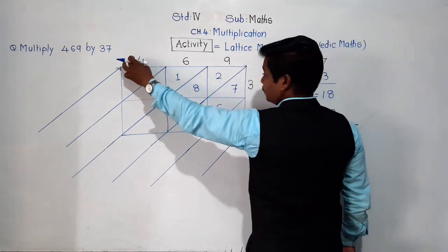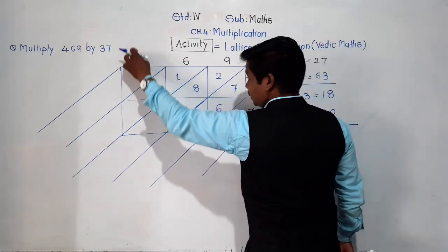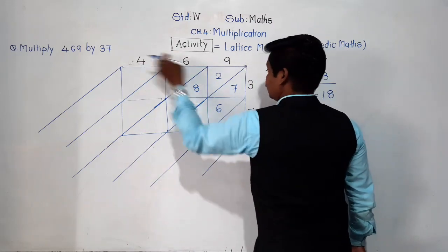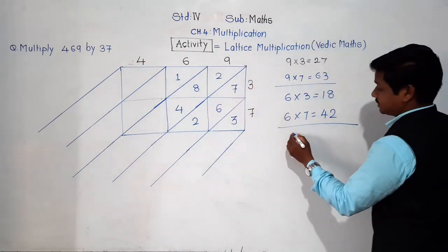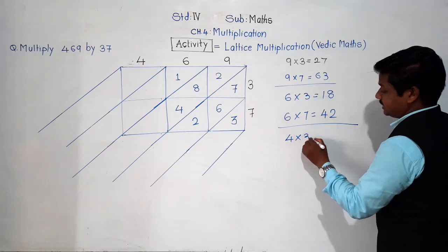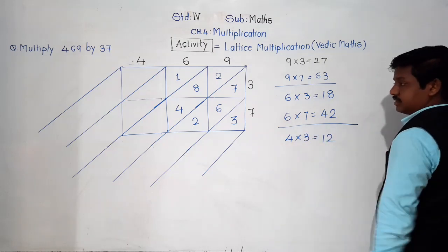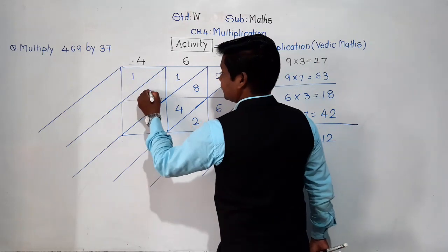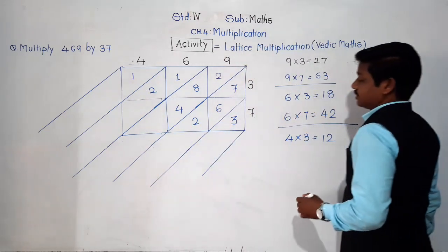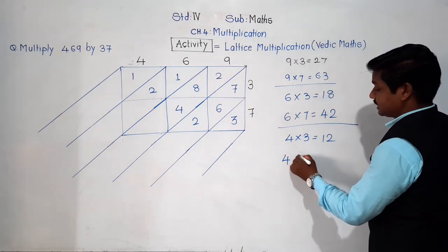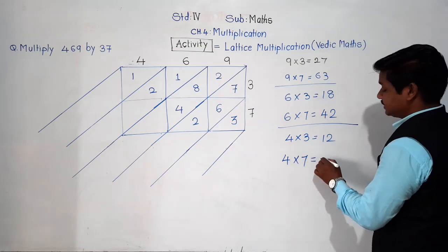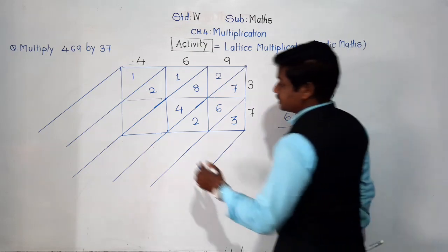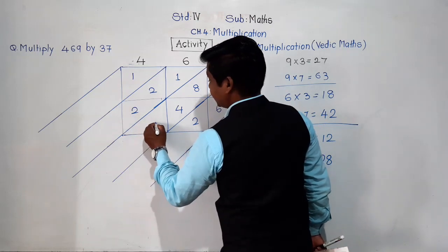Now for the leftmost column with digit 4: 4 × 3 = 12, so 1 in the upper part and 2 in the lower part. Then 4 × 7 = 28, so 2 in the upper part and 8 in the lower part. All multiplications are now complete.